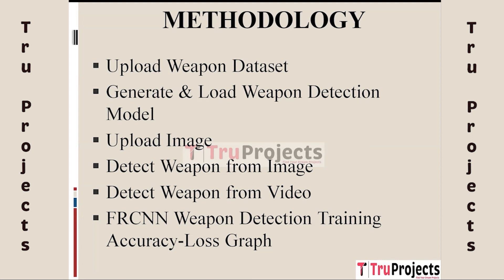The fifth module is Detect Weapons from Video. This module extends the weapon detection capability to real-time CCTV videos. Users can upload a video file and the FRCNN model will process each frame in the video to detect weapons. This enables real-time monitoring and detection of weapons within surveillance footage.